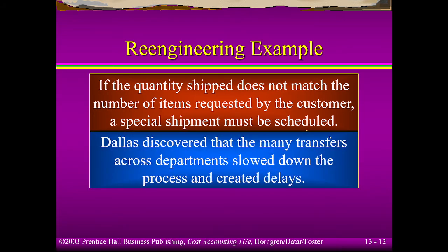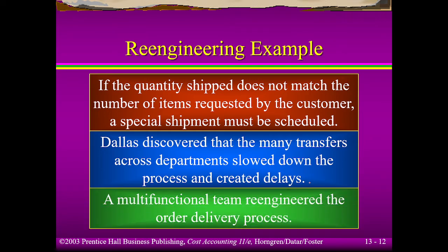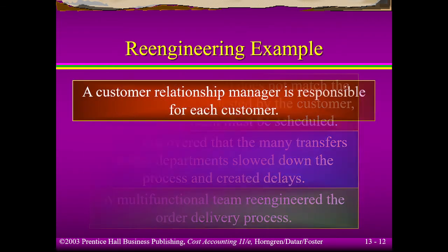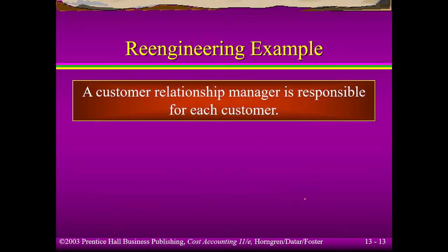There are too many transfers across departments before you can deliver what had been requested. This would really delay providing the product and providing the service. So we need to re-engineer the order delivery system.